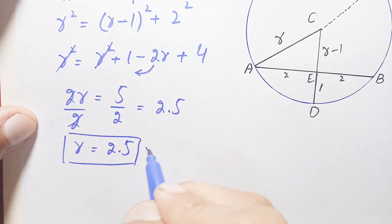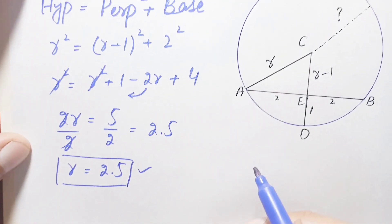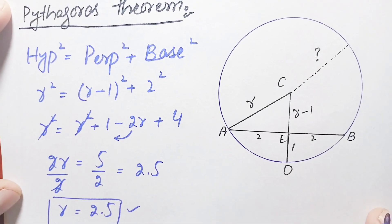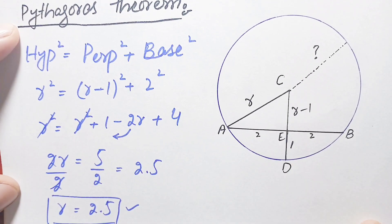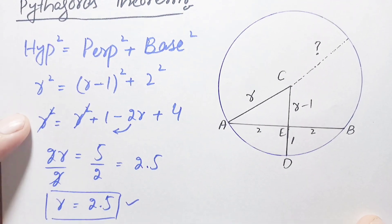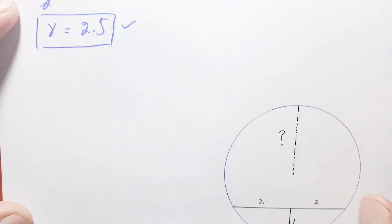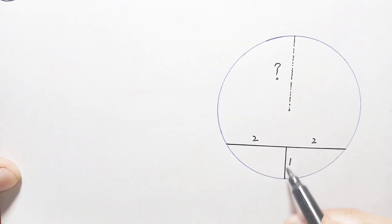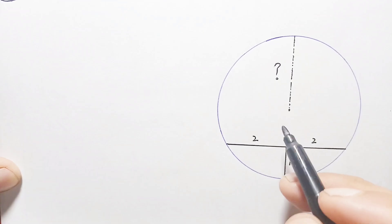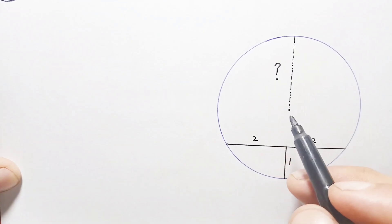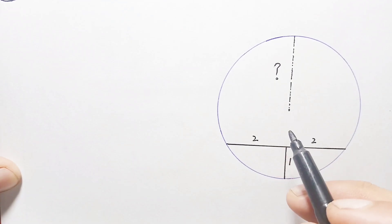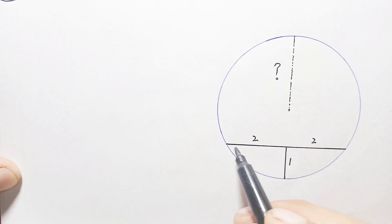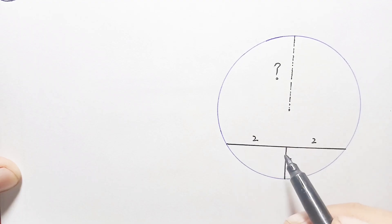So our radius from the first method is 2.5 units — that is our required answer. Now we will solve this problem using the second method. We again have the same circle, the same chord, and the same perpendicular bisector, and we will use the chord rule.